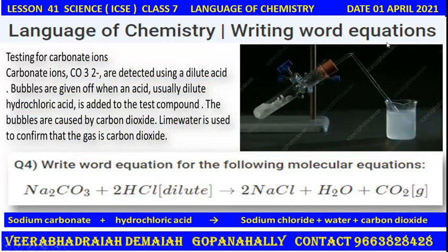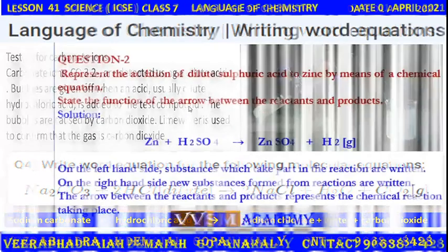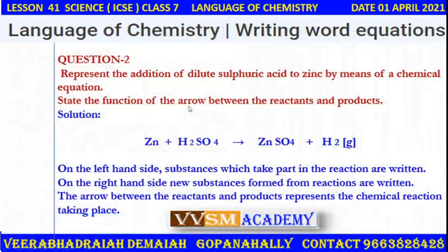Add dilute acid to the test tube — a reaction takes place and carbon dioxide is liberated. The gas is passed through the delivery tube into lime water. If the lime water turns milky, then the given compound contains carbonate and the gas is confirmed as carbon dioxide. As usual: experiment, observation, and inference.